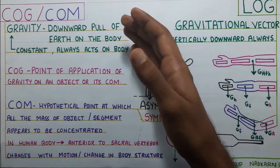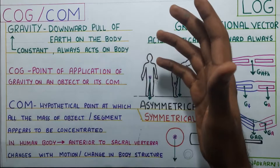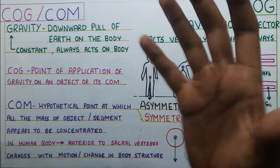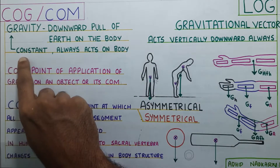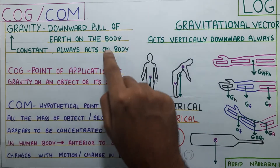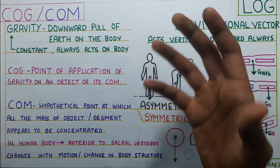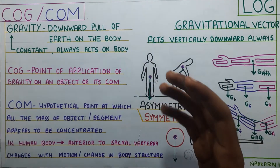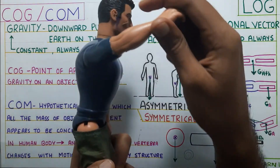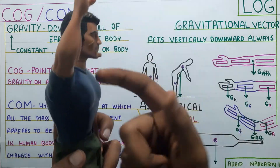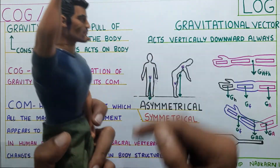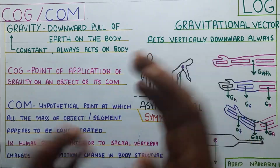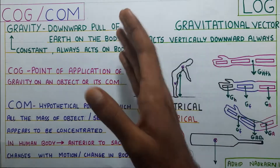Starting with gravity — it is a downward pull of earth on the body. There are different definitions for gravity but this was the most relevant one when we are learning biomechanics. Gravity is always constant and it always acts on the body. Whenever we are talking about kinetics — that is the forces acting on the body — we will be talking about, say, shoulder flexion. During shoulder flexion, your deltoid will be acting against the gravity. That's why gravity always has to be taken into consideration when we are talking about kinetics.